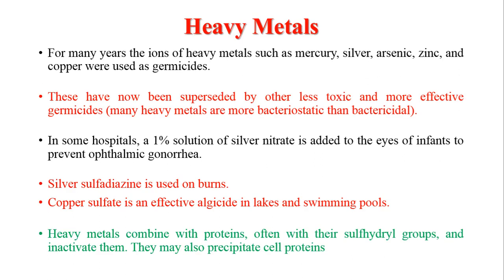The next category is heavy metals. For many years, ions of heavy metals such as mercury, silver, arsenic, zinc, and copper were used as germicides. However, they have significant toxicity, so their use is now limited and less toxic substances are preferred. In some hospitals, a 1% solution of silver nitrate is added to the eyes of infants to prevent ophthalmic gonorrhea, a bacterial disease of the eyes. Silver sulfadiazine is used on burns. Copper sulfate is an effective algicide in lakes and swimming pools. Heavy metals combine with proteins, often at their sulfhydryl groups, inactivating microbial proteins and possibly precipitating cell proteins.